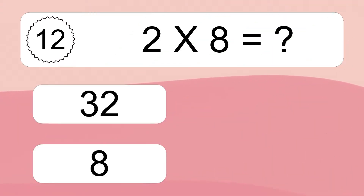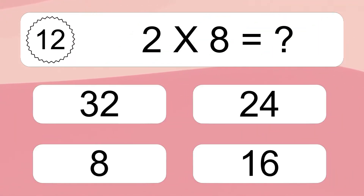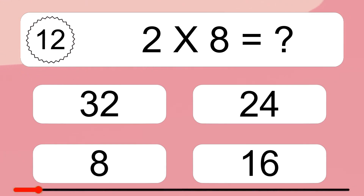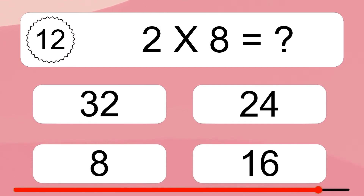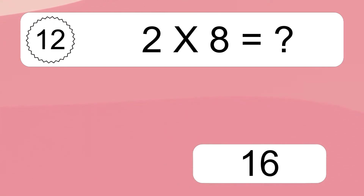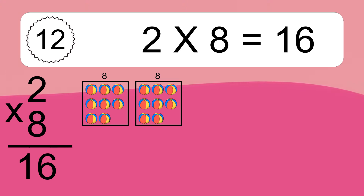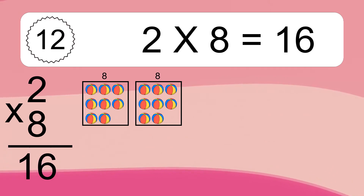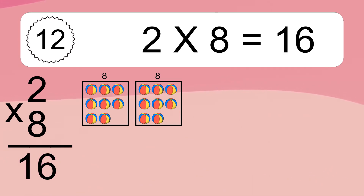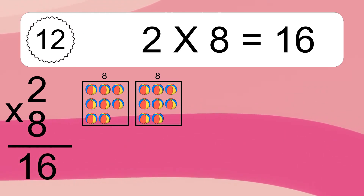Two times eight equals what? Two times eight equals 16. We have two boxes, and each box has eight colorful balls inside. If you count all the balls in all the boxes together, you will have two times eight balls. This equals 16 balls.